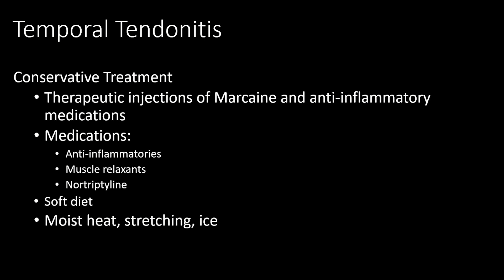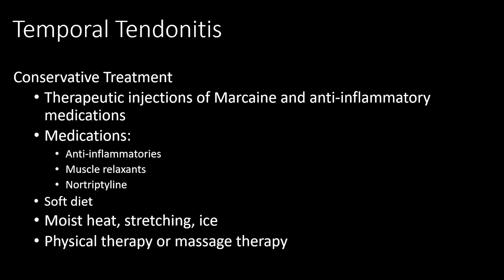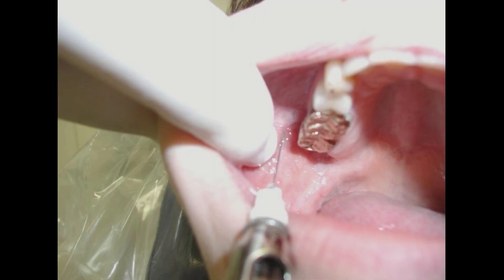Physical therapy and massage therapy are also very beneficial in treating temporal tendonitis. Here I am giving an injection into the temporal tendon on the lateral side, inside the mouth along the upper jaw. I use a very small needle — almost the size of an insulin needle — and after applying a topical anesthetic, I give a very slow injection of the medication.